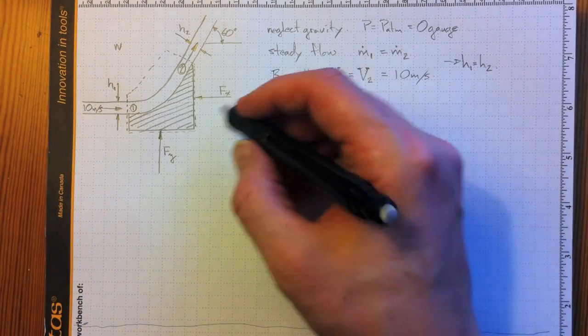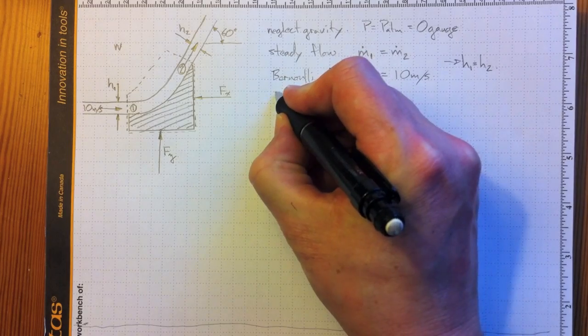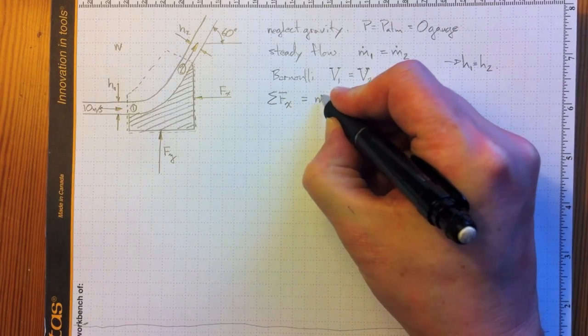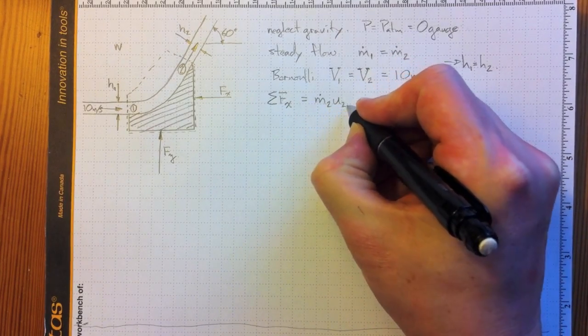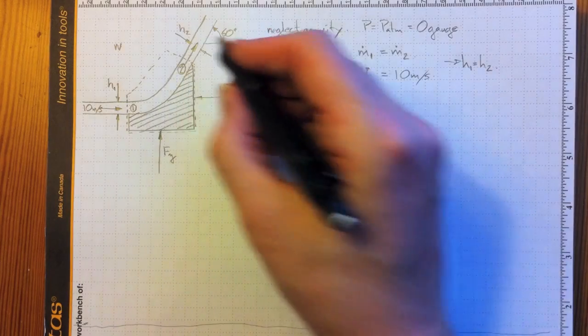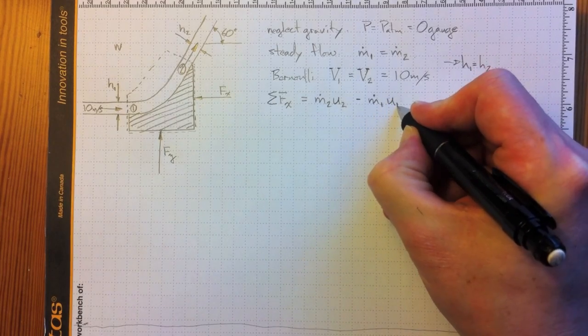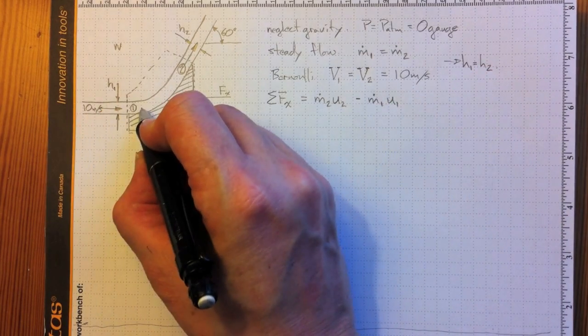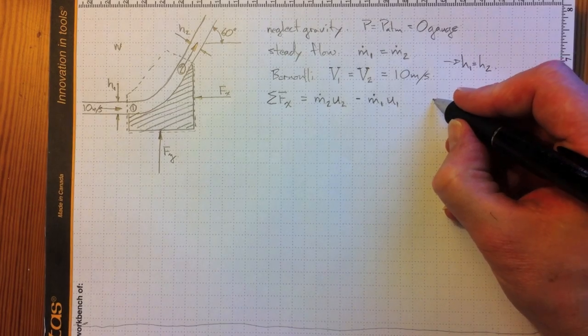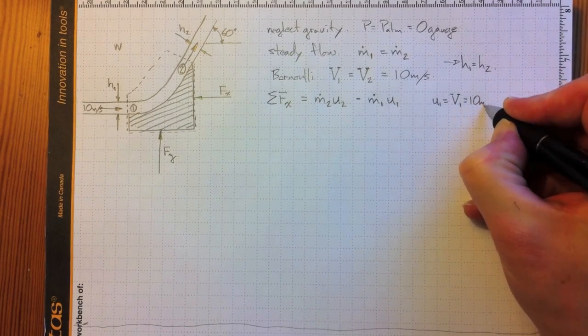Now, if we go to try to find out what the forces are, we're going to need to balance the forces in the x direction. I'll do that first. Sum of the forces acting in the x direction will be equal to m.2u2, that's the mass flow and the u component of velocity, the velocity in the x direction at the outlet, minus m.1u1, the mass flow at 1 times the x velocity component at 1. So we need to know what these values are. u1 is equal to capital V1 is equal to 10 meters per second.